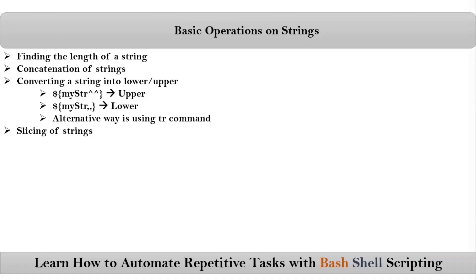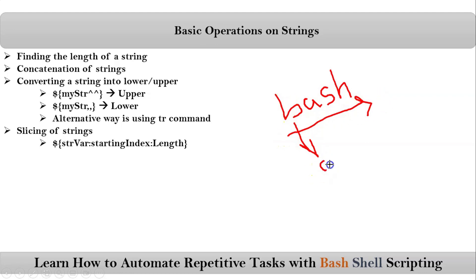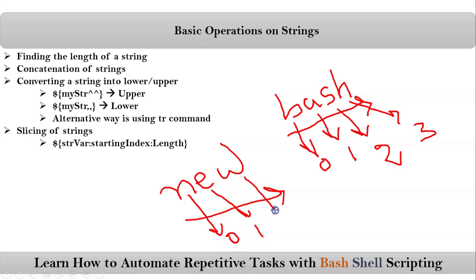Next is slicing of strings — getting a part of your string or a substring using the index concept. The syntax is: dollar curly-brace, your variable, colon, starting index, colon, length. About indexes: in a string like 'bash', each character has a position assigned by the shell from left to right — b is 0, a is 1, s is 2, h is 3. This applies to any string, and indexing always starts at 0.